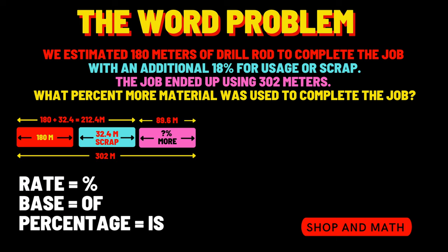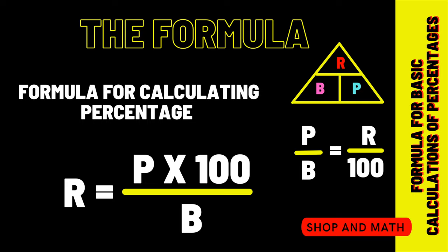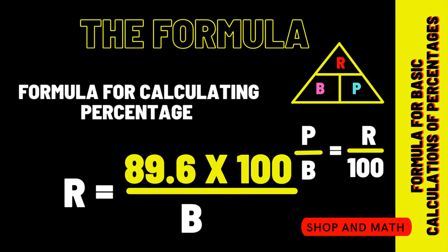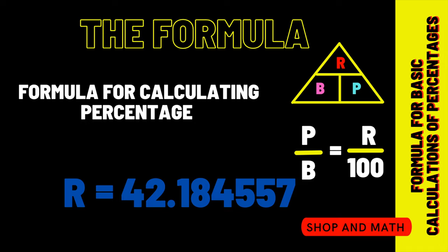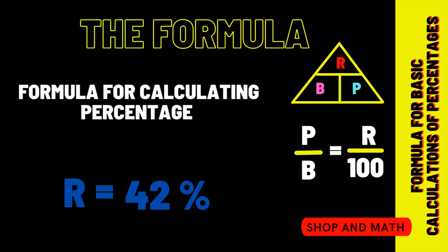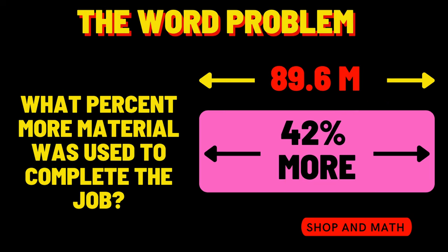Now it's time to calculate what percent more material was used to complete the job. Identify the rate, the base, and the percentage: the percentage is going to be 89.6 and the base is going to be 212.4. So 89.6 times 100 gives us 8,960 divided by 212.4 equals 42.184557 — we round that up to the nearest percent, which is 42%. Therefore we used 42% more material than what we quoted.